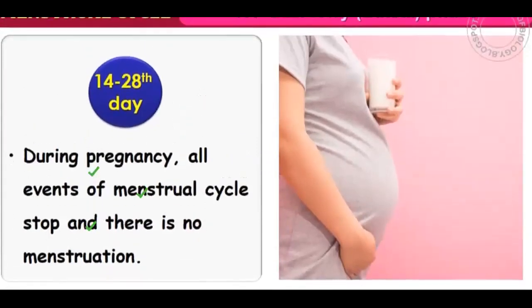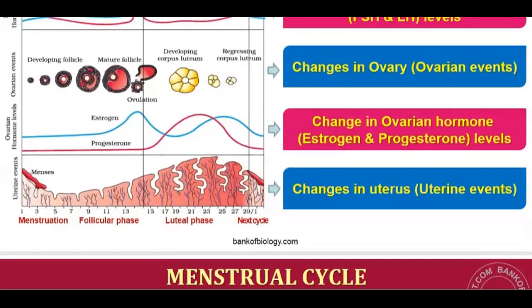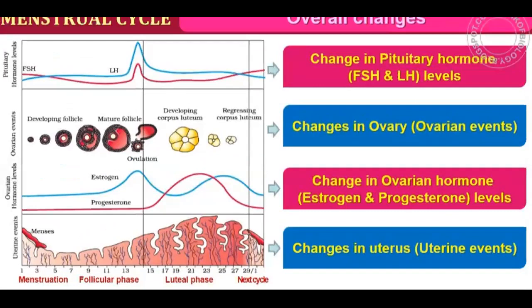During pregnancy, all events of the menstrual cycle stop and there is no menstruation. That is what we want to read about in the next video.